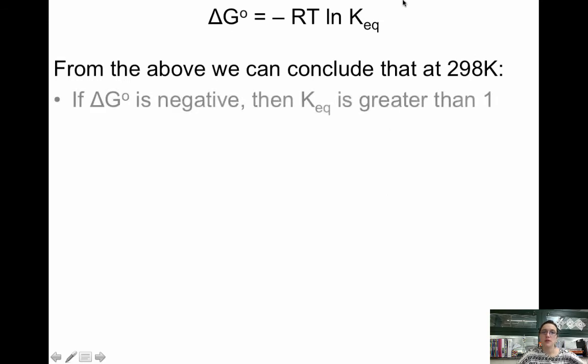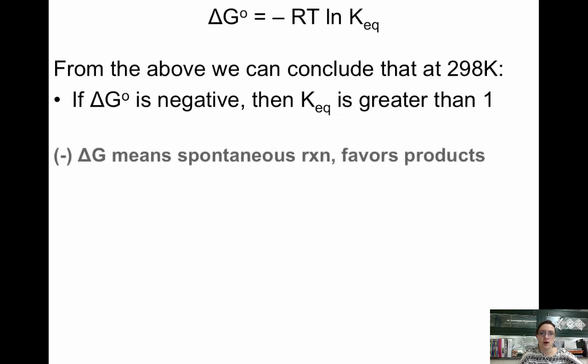From this equation, we can figure out at 298 Kelvin that if delta G is negative, this is spontaneous, which means KEQ is greater than 1. If you don't believe me, plug in a number, plug in negative 10, plug in 298 Kelvin and 8.314, and see what you get for K. A negative delta G means a spontaneous reaction and favors the products.